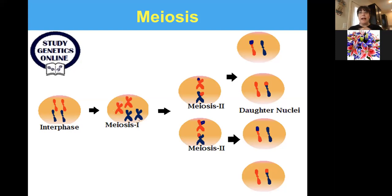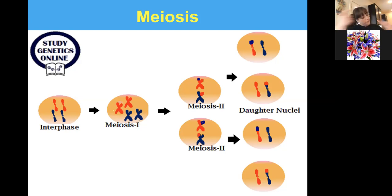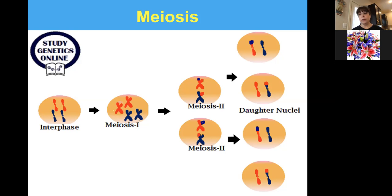All right, so that is what meiosis and stem cells are leading to. Now let's talk about how we make specific egg and sperm to eventually get to those stem cells. So we're now going to write in your notes Roman numeral one, meiosis, open parentheses, making egg and sperm, close parentheses.